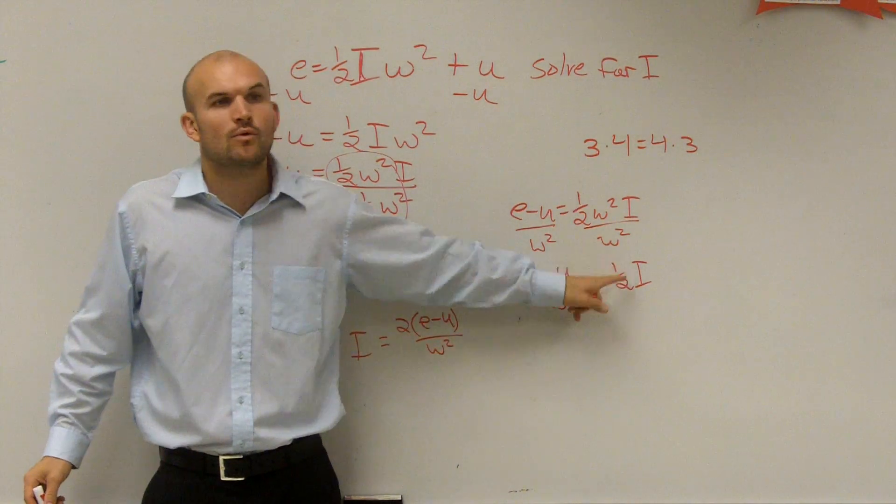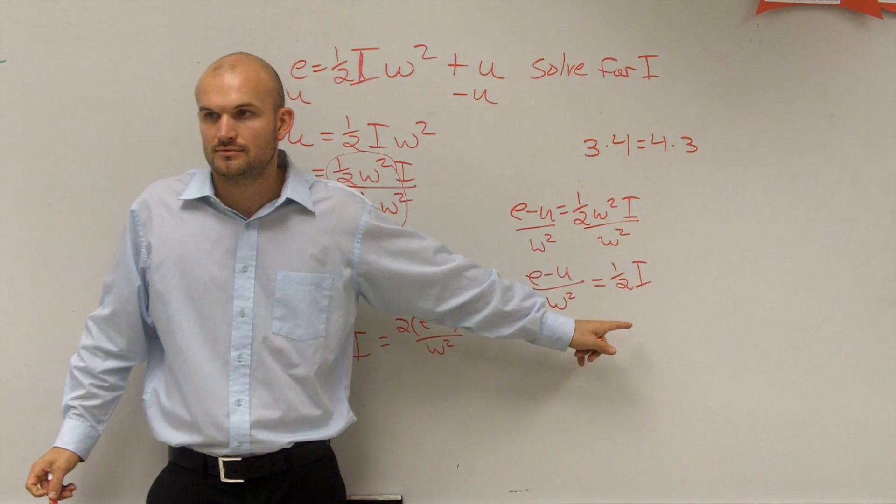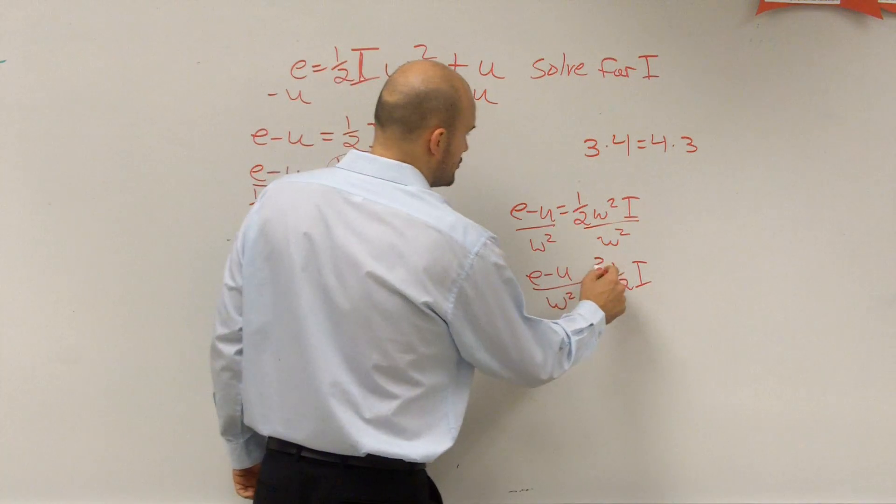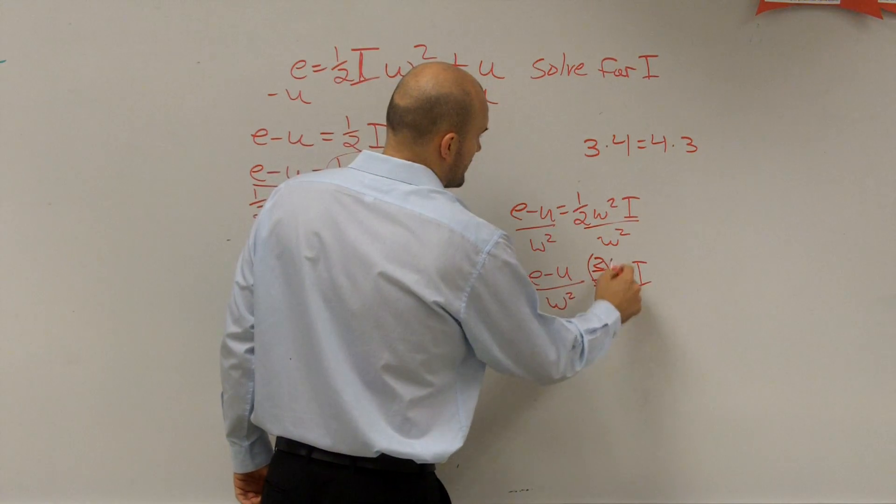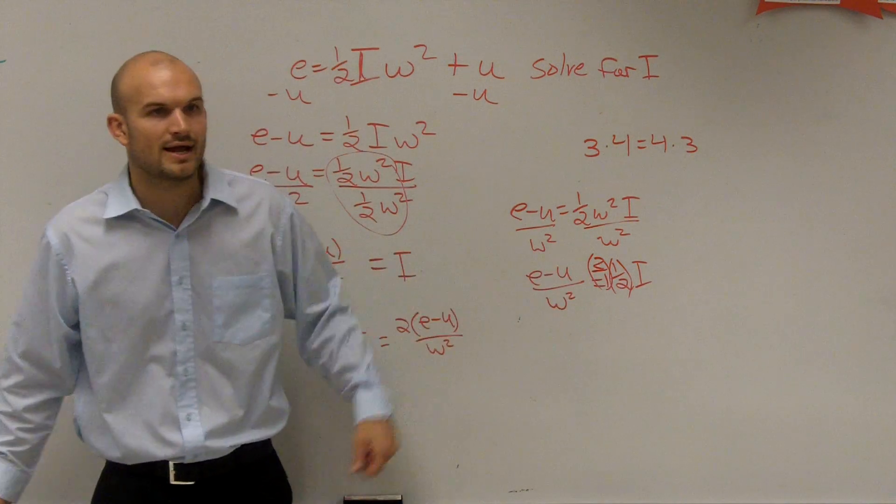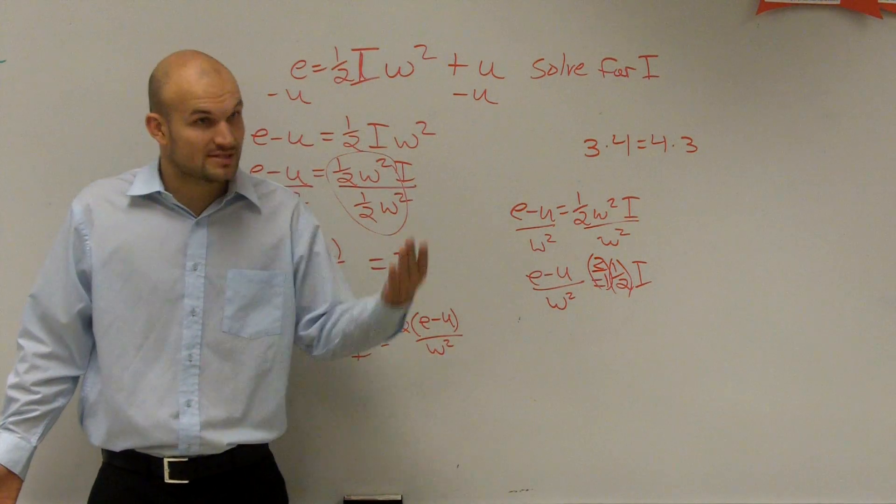So what do I need to multiply one half by to get it to be one? Two over one. You multiply by two over one because what is two over one times one? What is two over one and one half? What are those? Reciprocals.